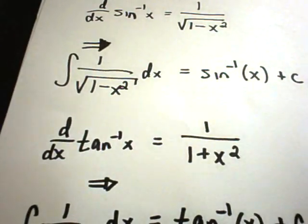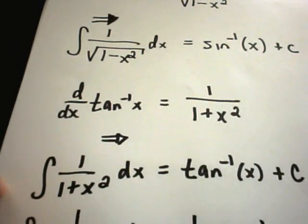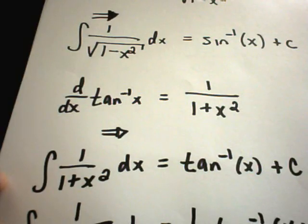And likewise the derivative of arc tangent is 1 over 1 plus x squared. Well that means if you integrate 1 over 1 plus x squared you get arc tangent back.